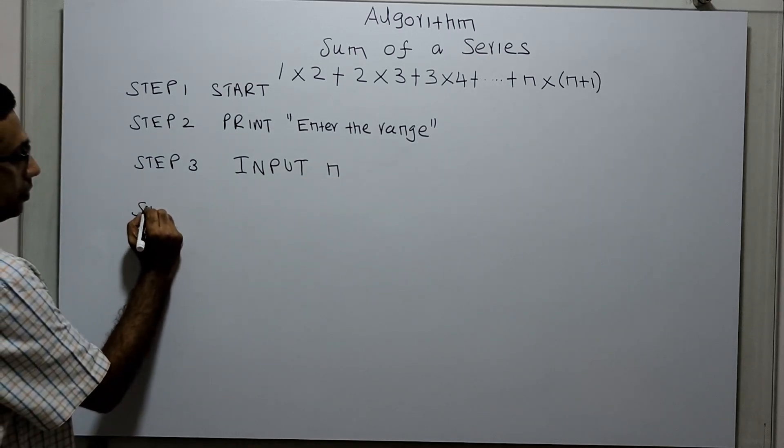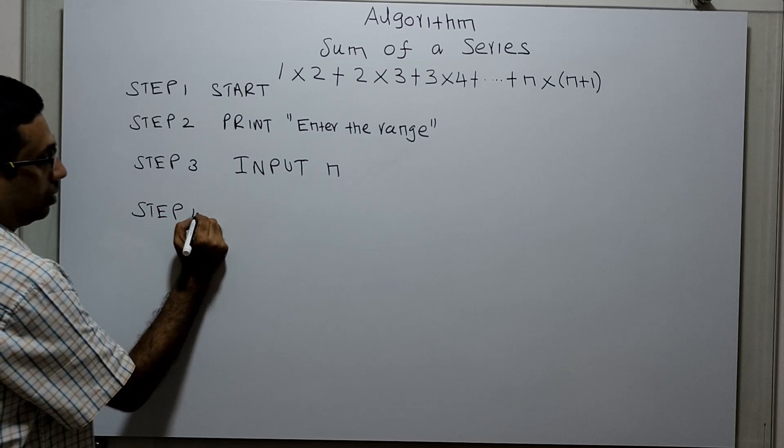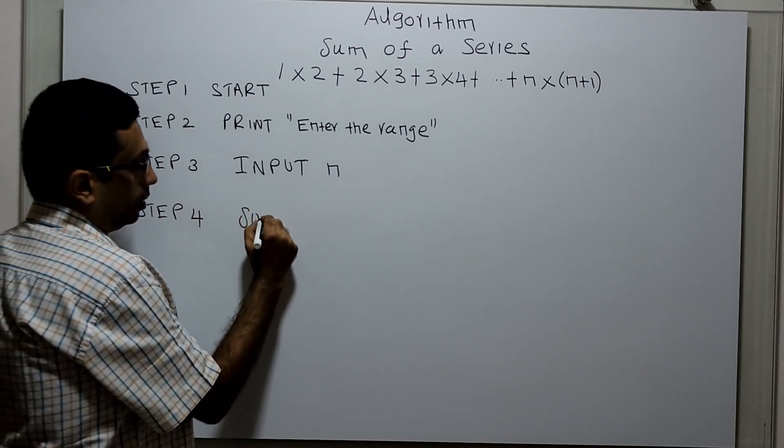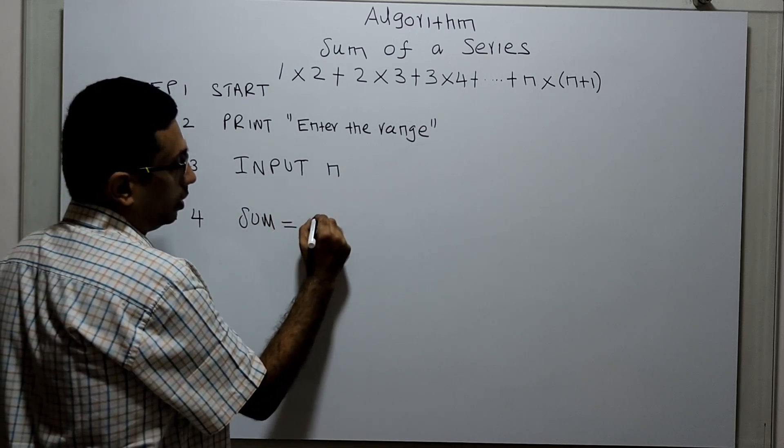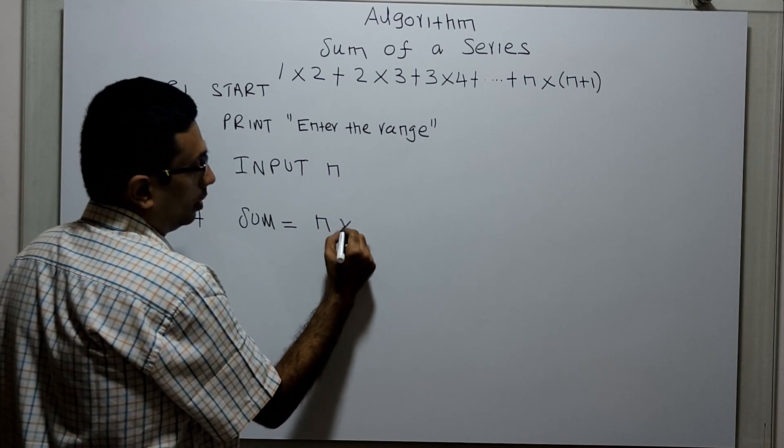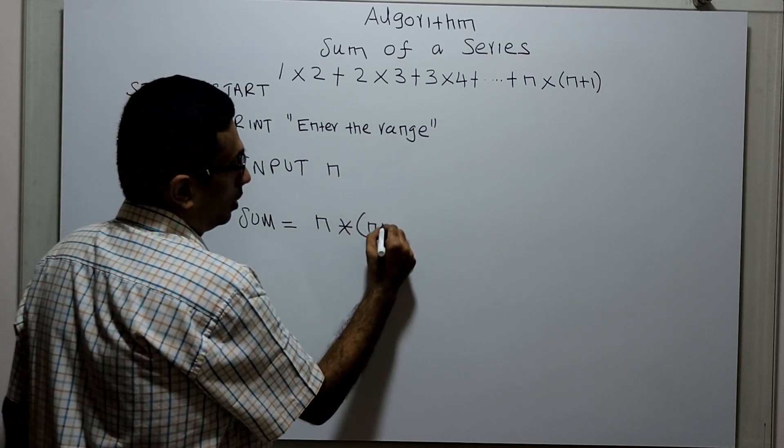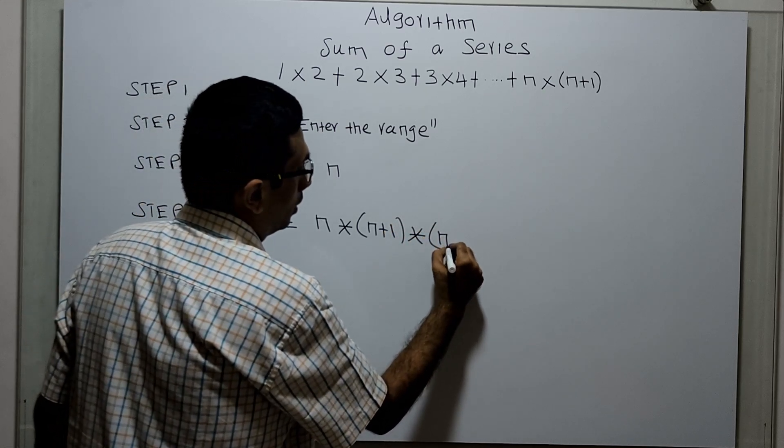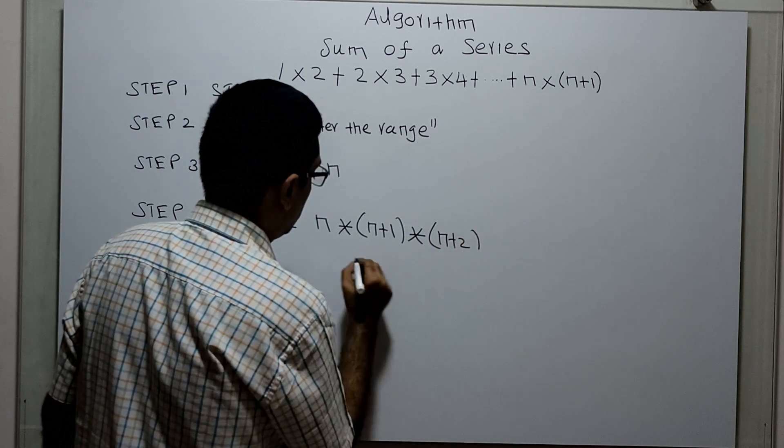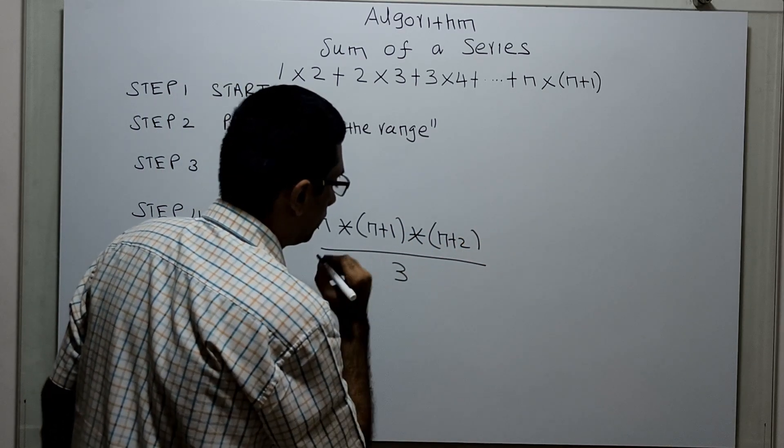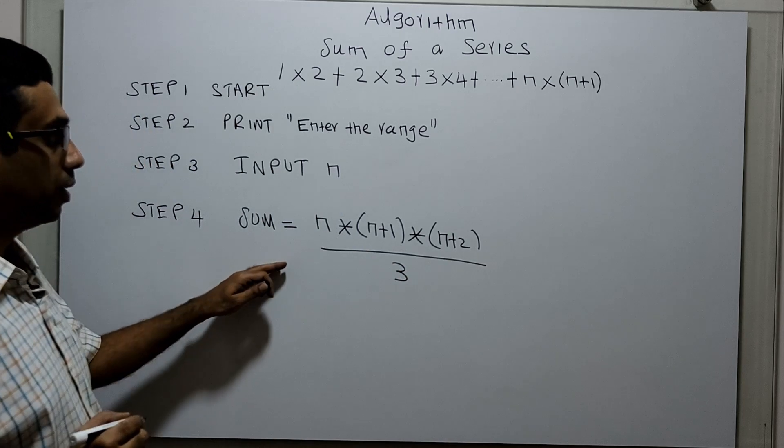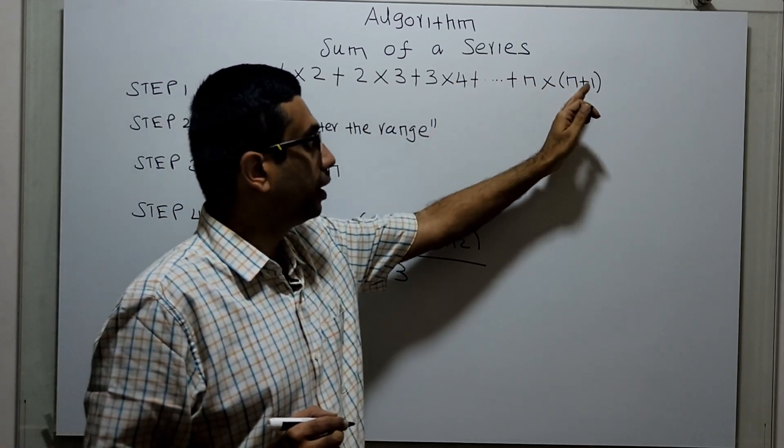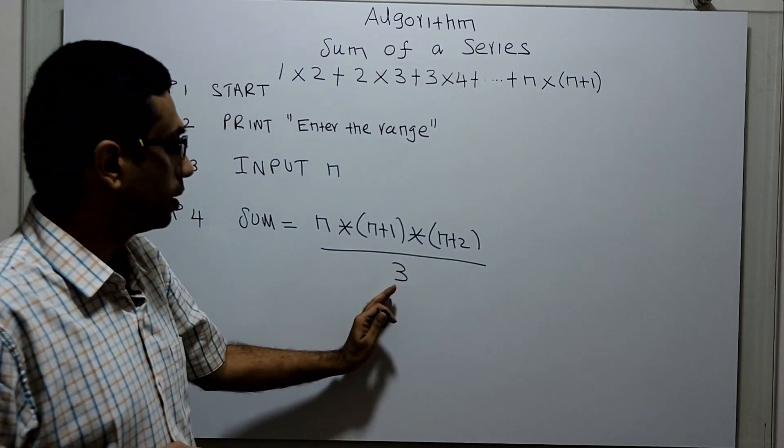Step 4: I am applying a formula. Sum equals n multiplied by (n+1) multiplied by (n+2) divided by 3. This is the formula to calculate the sum of the series from 1×2 up to n×(n+1).